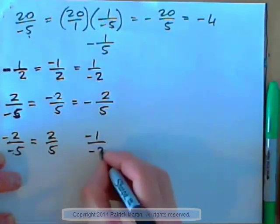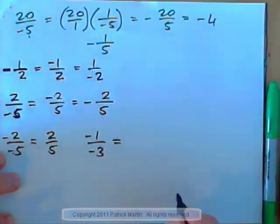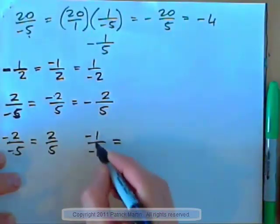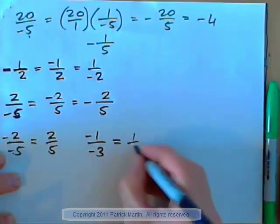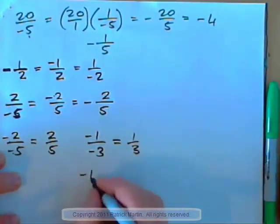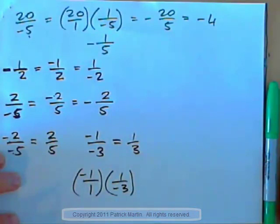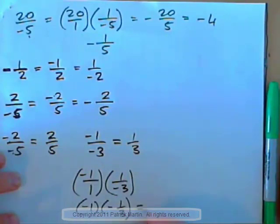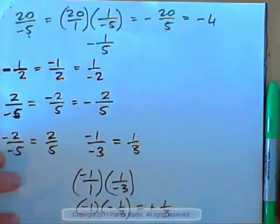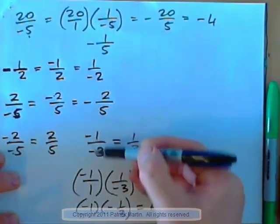So what would negative 1 over negative 3 be? Remember, it's negative divided by a negative — that gives a positive — positive one-third. Or you can think about it this way: negative 1 over 1 times 1 over negative 3, that's negative 1 times negative one-third. Negative times negative is positive, and 1 times a third is positive one-third. But obviously this is a roundabout way of doing it — just remember, negative over negative gives positive.